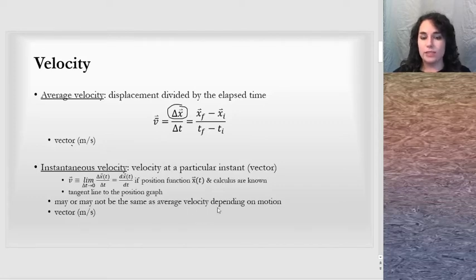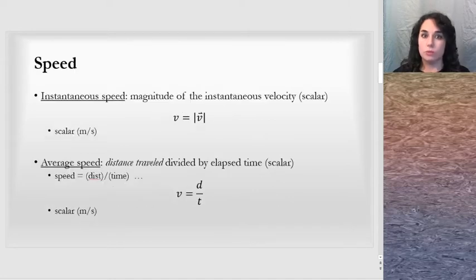This may or may not be the same value as average velocity. Again, instantaneous velocity is a vector. Velocity is always a vector, which is different than speed, which we reserve that term for a scalar quantity.